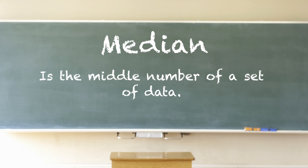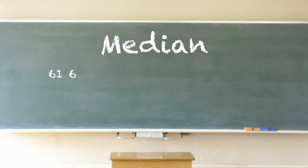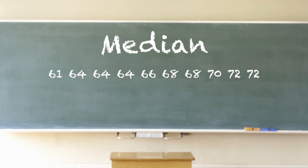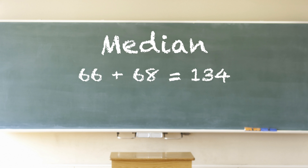Median: the median of a set of data is the middle number. To find the median, align the data from the smallest to the largest. If the quantity of numbers is even, add the two middle numbers together and then divide by 2.